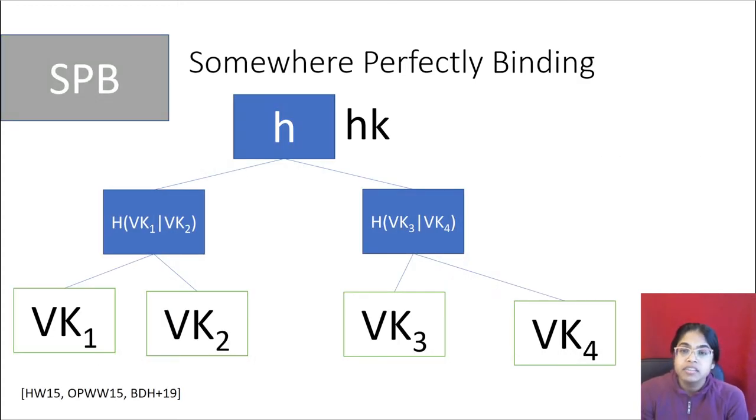The next building block is somewhere perfectly binding hashing, which really just looks like a Merkle tree. You take the ring, which is known, and you can write it as a vector and then hash it up as if you were in a tree until you get to the root. There's the hash value and the hashing key that goes along with it. The difference between somewhere perfectly binding hashing and a Merkle tree is we do have this property where at one index it really has to be that case that we are bound to whatever that value is. That's where that name somewhere perfectly binding comes from.